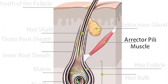Your erector pili muscles are bundles of smooth muscle fibres which attach to several follicles or a follicular unit. When these muscles contract it causes the hairs to stand on end, which is what we know as goosebumps. The contraction of the muscle is involuntary and normally stimulated by cold or fear.